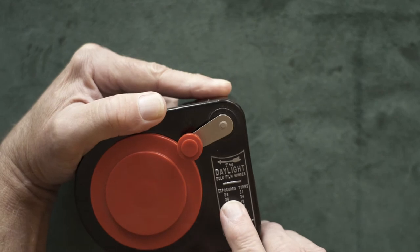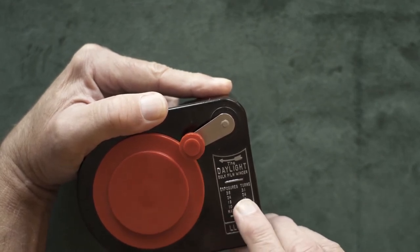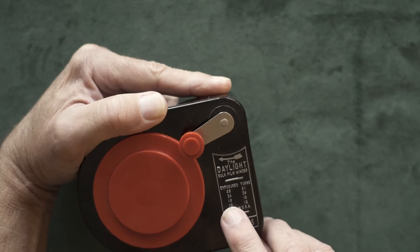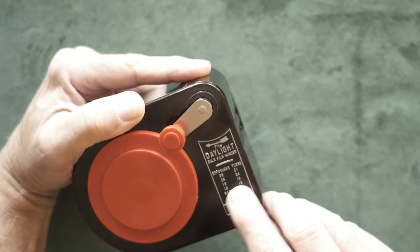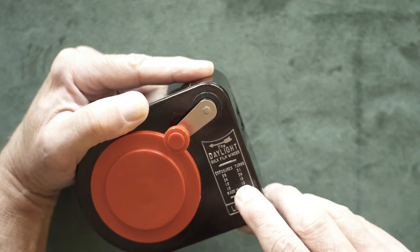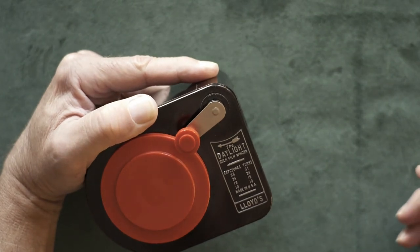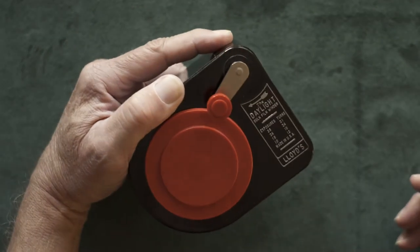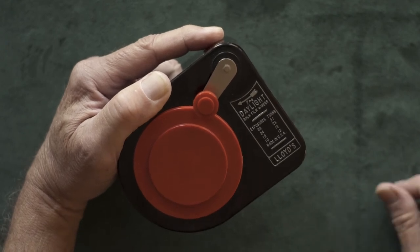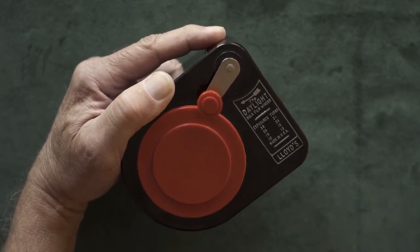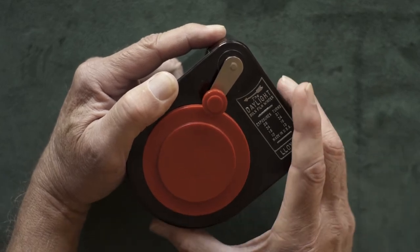Now then, it has readings here: 36 exposures, 31 turns; 24 exposures, 24 turns; 18 exposures, 18 turns—that's probably 19 turns; 10 exposures, 13 turns. Now I'm going to use probably the 10 exposures because I test a lot of cameras and I don't want to waste a lot of film. Because if it doesn't turn out, then you just wasted film. And a lot of times I'm not shooting anything particular, just testing.